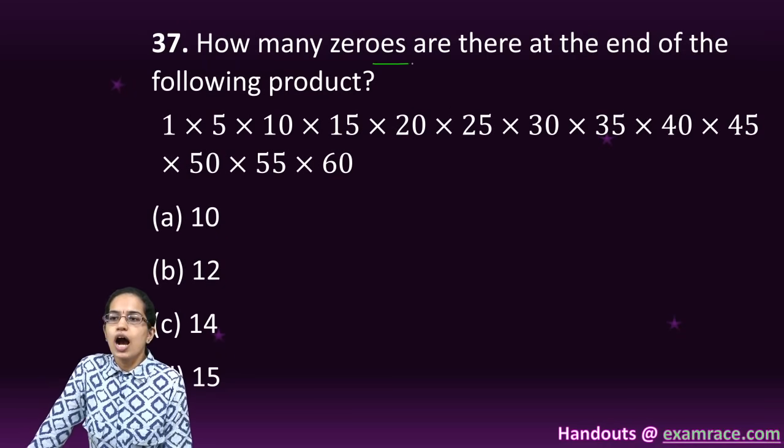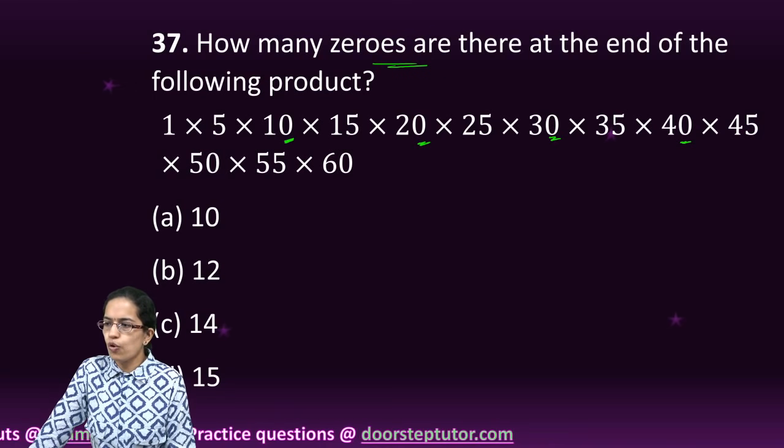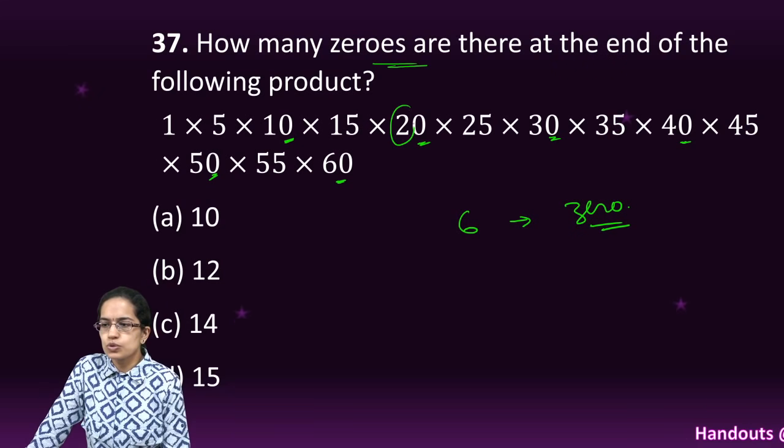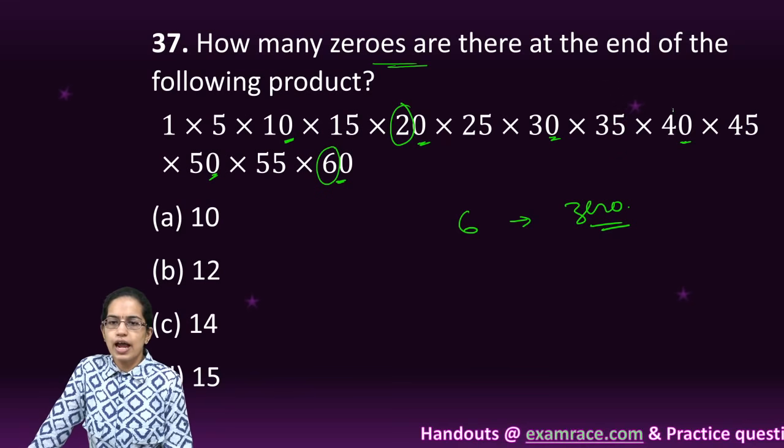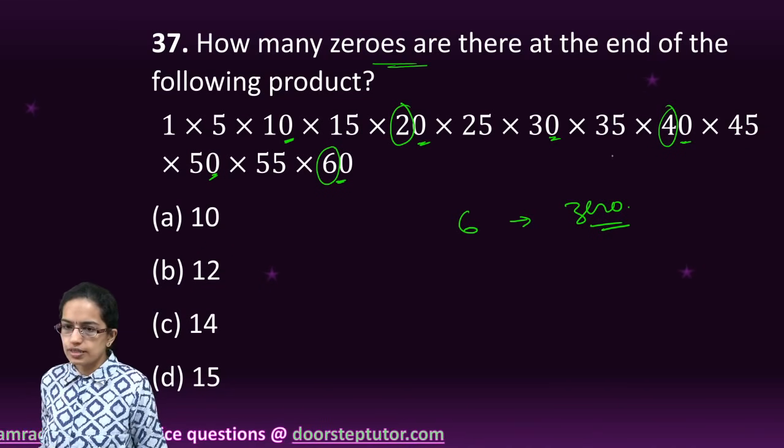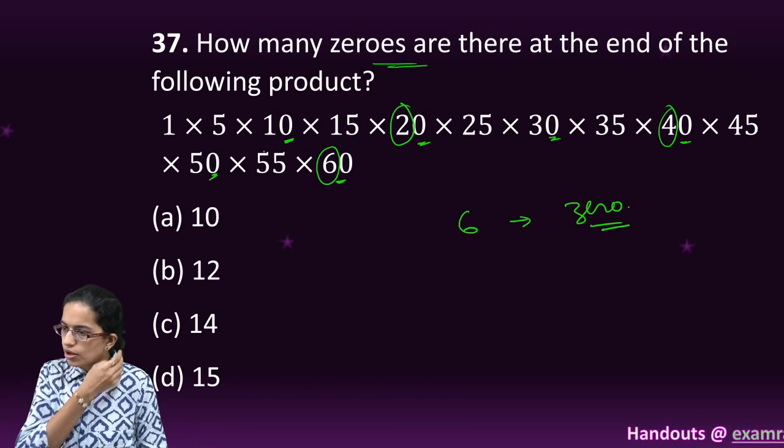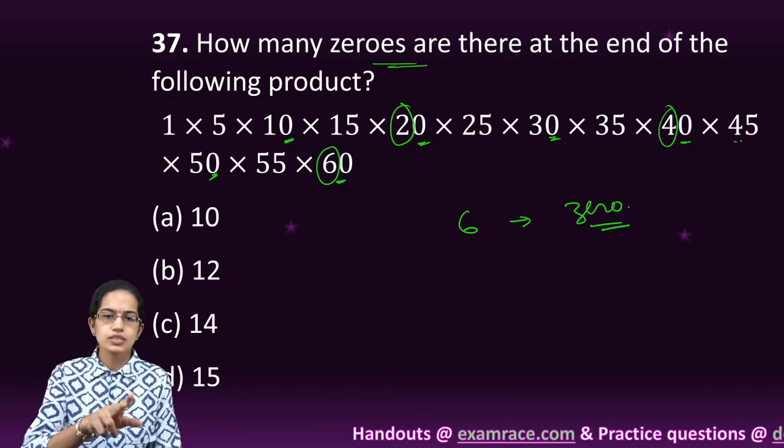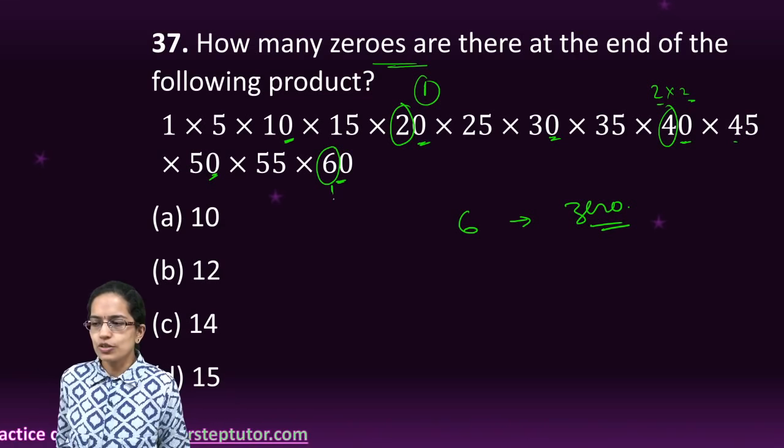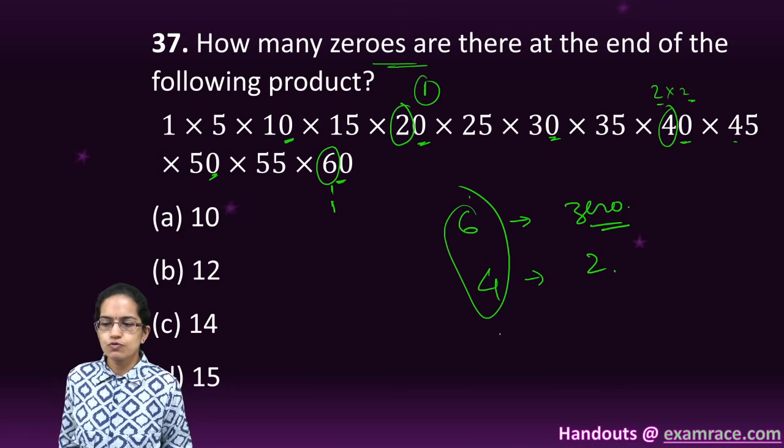How many zeros are there at the end of the following product? So first count the zeros itself. So you'll have 1, 2, 3, 4, 5, and 6. So 6 zeros are there. Now 2 into 5 would again make 0. So how many 2's? You would have 1, 2 here. Then another 2 here, another 2 here. So 4 twos are there. So how many zeros would be there? 6 plus 4, that is 10 zeros would come.